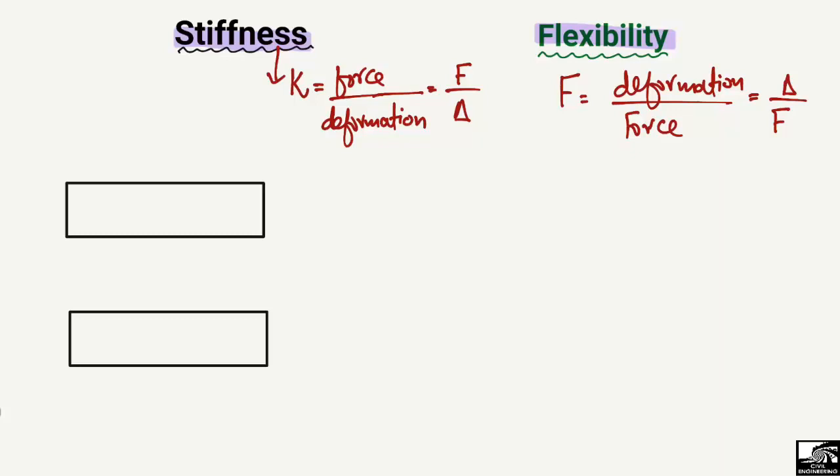To show how they are different, I will take the example of two materials. Here is the first material — maybe a steel bar, rubber, or aluminum sheet — and this is the second material. Now we will define the stiffness of each material, and later their flexibility.